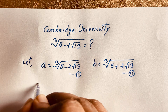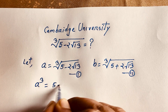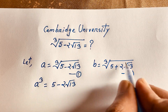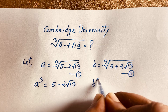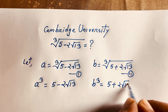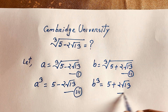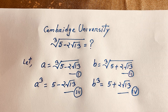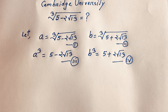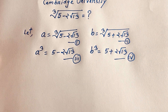If I cube both sides of the first equation, I get a³ equal to 5 minus 2 square root 13. If I cube both sides of the second equation, I get b³ equal to 5 plus 2 square root 13. This is our third equation and this is our fourth equation.